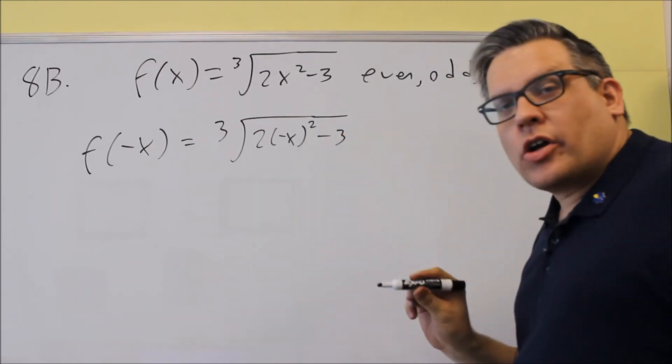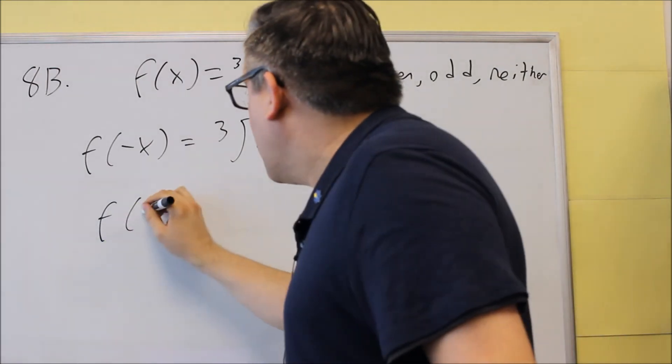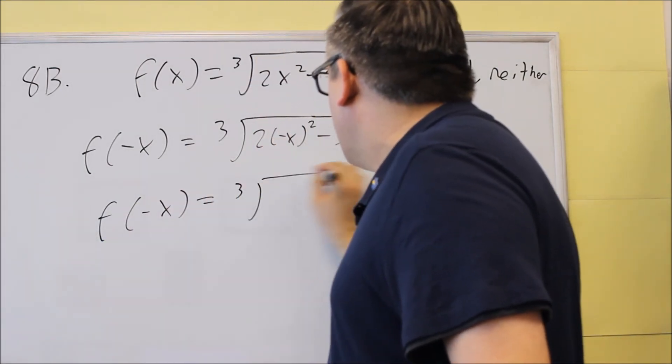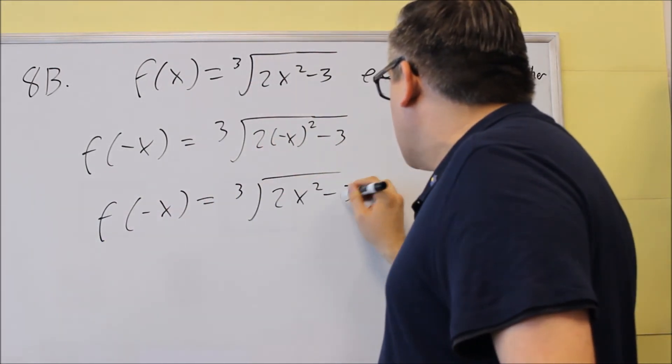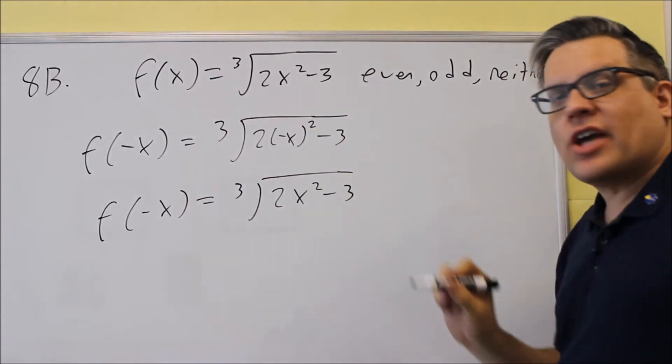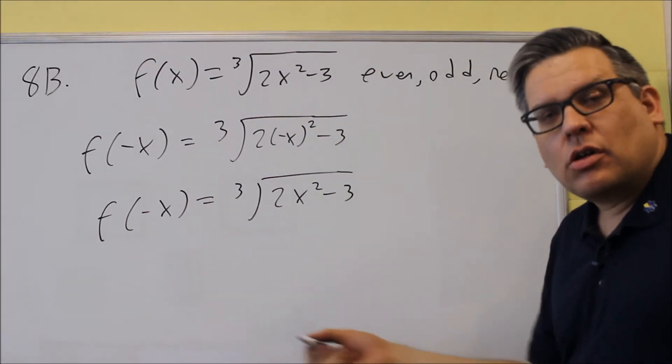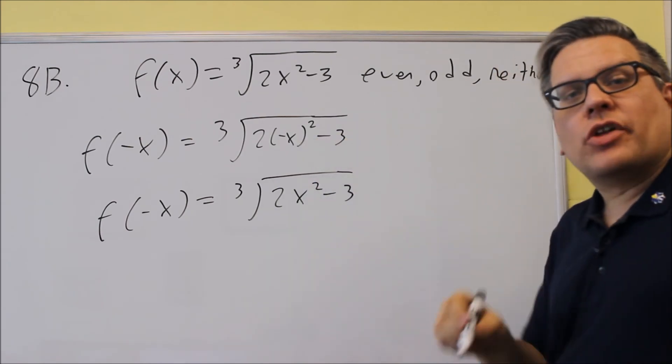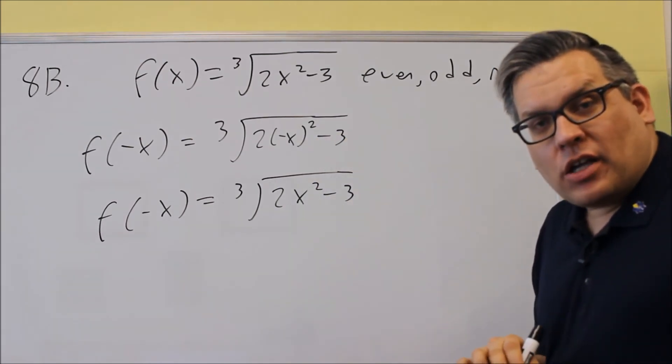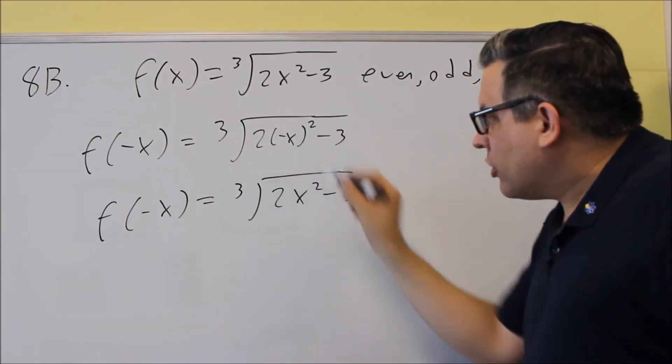So, negative x, we're squaring that, you're going to get cube root of 2x squared minus 3 because the negative, any time you have a negative raised to an even power, it goes away. But if you have a negative raised to an odd power, then it remains. Okay, so for this case, it would go away.